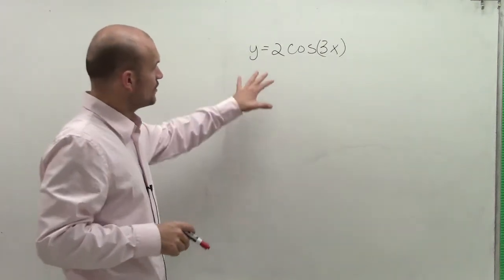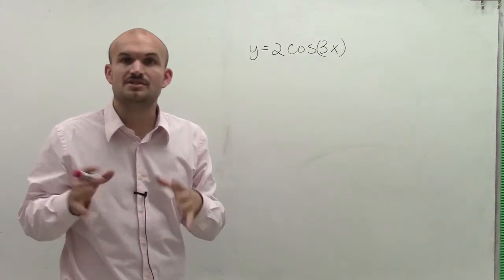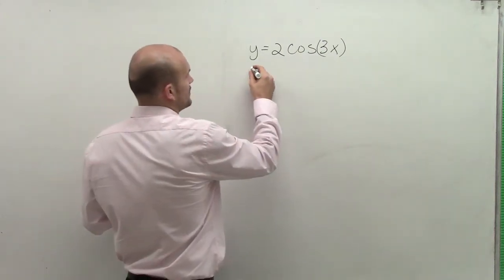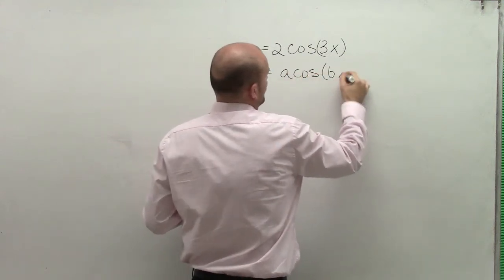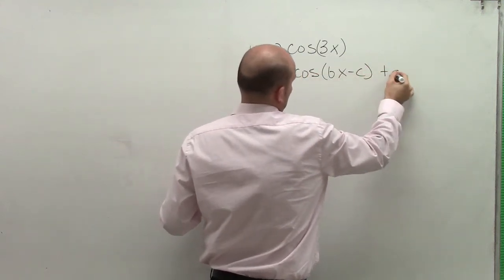So first of all, when we have a function, we always want to remember what is kind of like our standard form of our function. So we can write it in y equals a times cosine of bx minus c plus d.